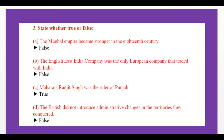State whether true or false answers: The Mughal Empire became stronger in the 18th century — that is false, because after the death of Aurangzeb, the Mughal Empire lost its control and became very weak. The English East India Company was the only European company that traded with India — that is also false, because Portuguese, French, and even Dutch companies traded with India.